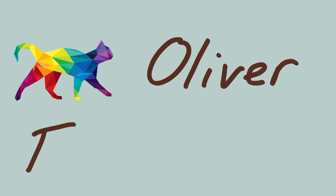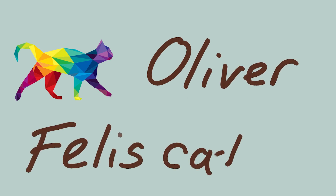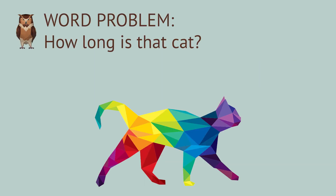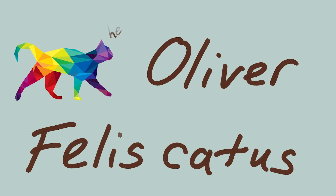Oliver is a domestic short-haired cat. Cats are made up of three parts: a head, a body, and a tail.